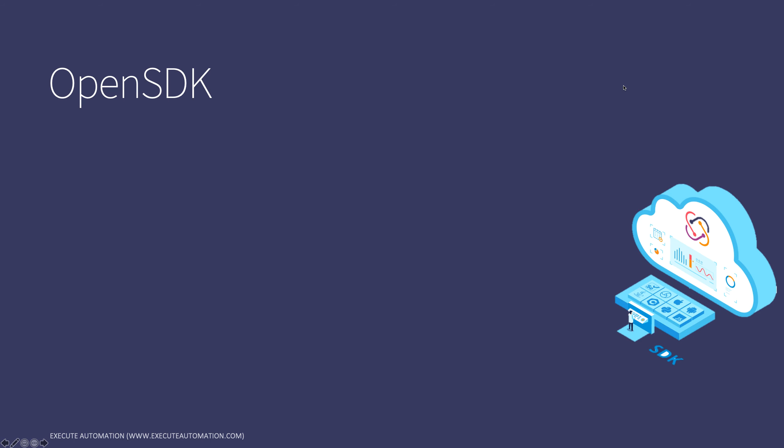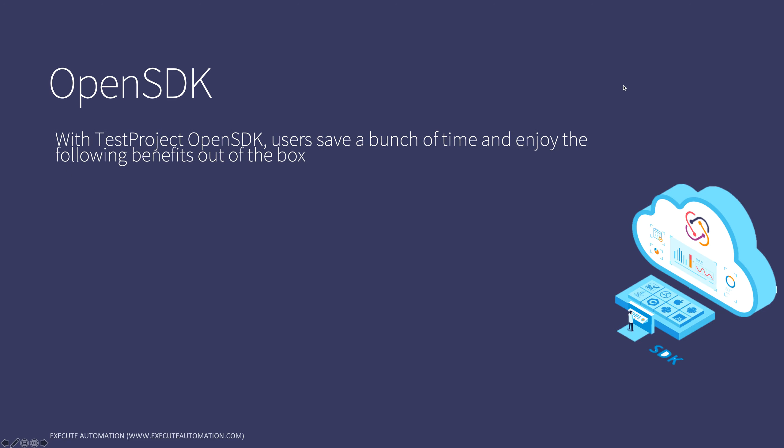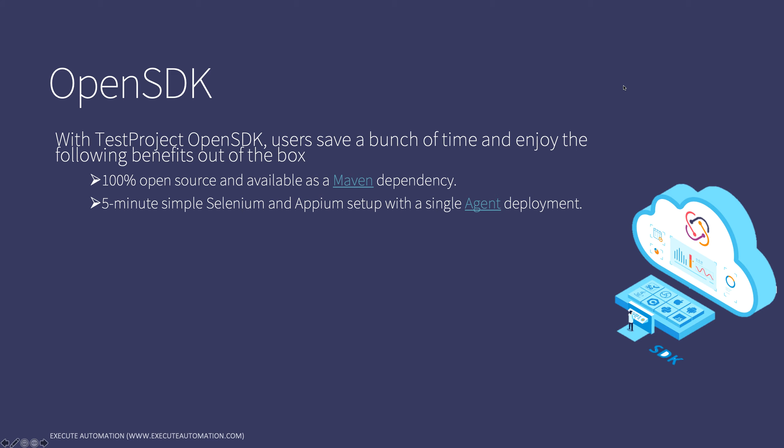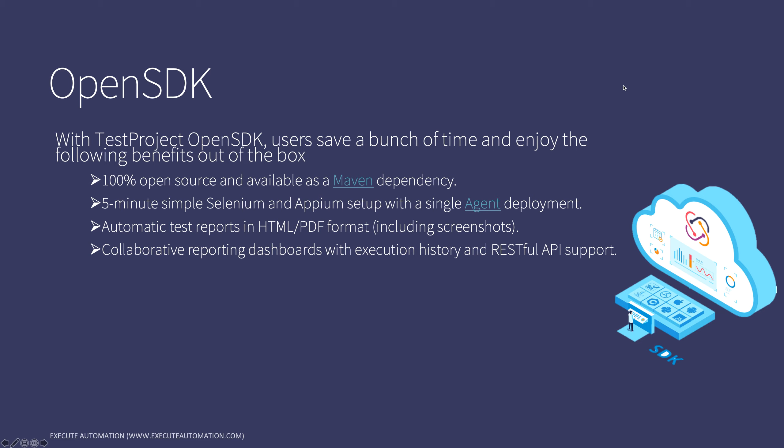So let's get into the open SDK itself. What is this open SDK? The TestProject open SDK saves users a bunch of time and offers the following benefits out of the box: 100% open source, availability as a Maven dependency, 5-minute simple Selenium and Appium setup with single agent deployment, and automatic test reports in HTML and PDF formats — so you don't have to specify screenshot steps manually or report executed steps to the TestProject platform.